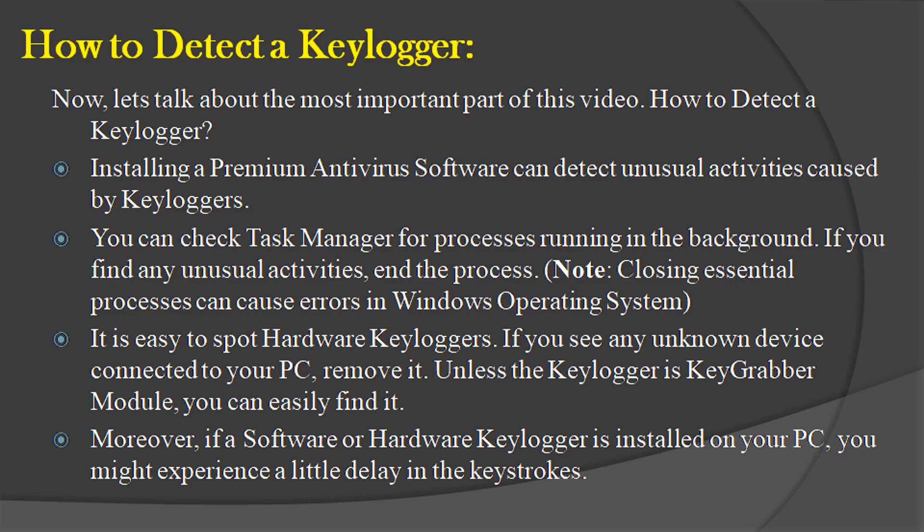How to detect a Keylogger: installing a premium antivirus software can detect unusual activities caused by Keyloggers. You can check Task Manager for processes running in the background — if you find any unusual activities, end the process. It is easy to spot hardware Keyloggers; if you see any unknown device connected to your PC, remove it. Unless the Keylogger is a Keygrabber Module, you can easily find it. Moreover, if a software or hardware Keylogger is installed on your PC, you might experience a little delay in the keystrokes.